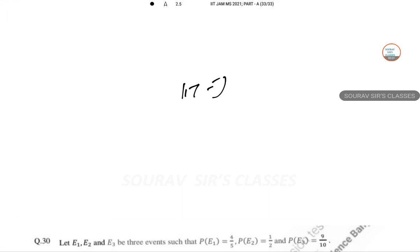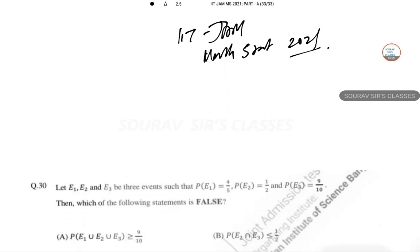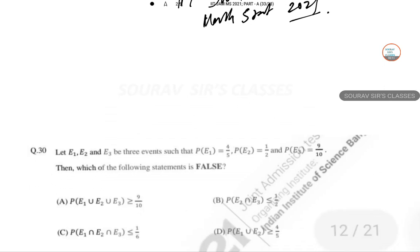IIT JAM mathematical statistics 2021 paper solution. I'm starting from question 30, which is a probability question. Given P(E₁), P(E₂), and prior E₃, which of the following is false?